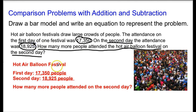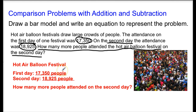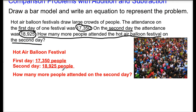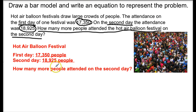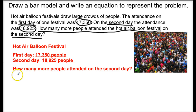We're going to use those pieces of information to help us draw a bar model and write an equation. So we set up the first day — 17,350 people — and the second day — 18,925 people. And we're solving for how many more people attended on the second day.